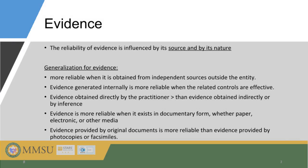The reliability of evidence is influenced by its source and by its nature. Generalizations about the reliability of various kinds of evidence can be made; however, such generalizations are subject to important exceptions. Evidence is more reliable when obtained from independent sources outside the entity. Evidence generated internally is more reliable when related controls are effective. Evidence obtained directly by the practitioner is more reliable than evidence obtained indirectly — for example, observation of a control is better than inquiry about it. Evidence is more reliable in documentary form, whether paper, electronic, or other media. Evidence provided by original documents is more reliable than evidence provided by photocopies or facsimiles.